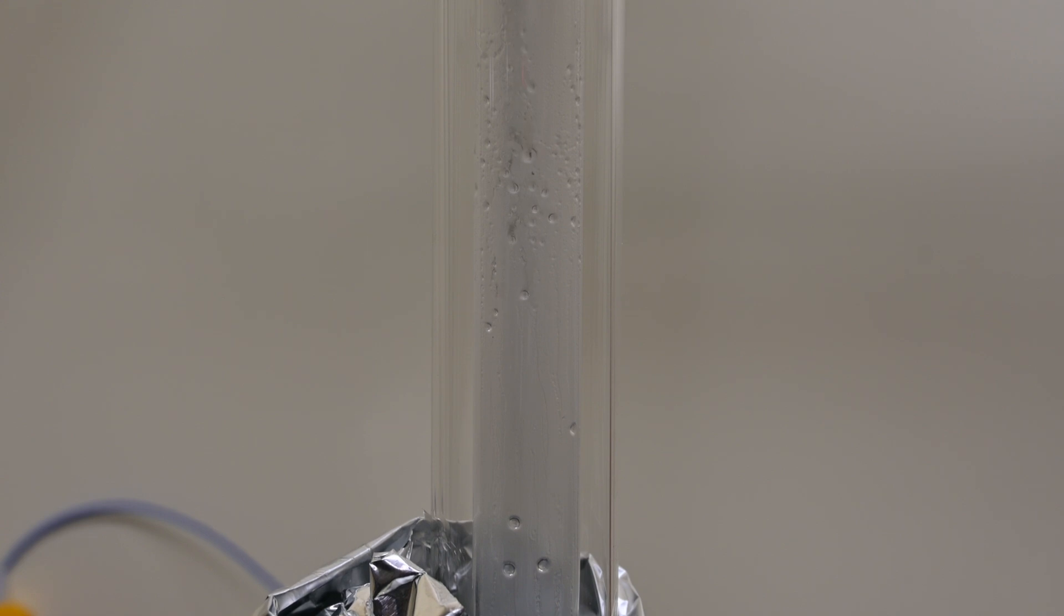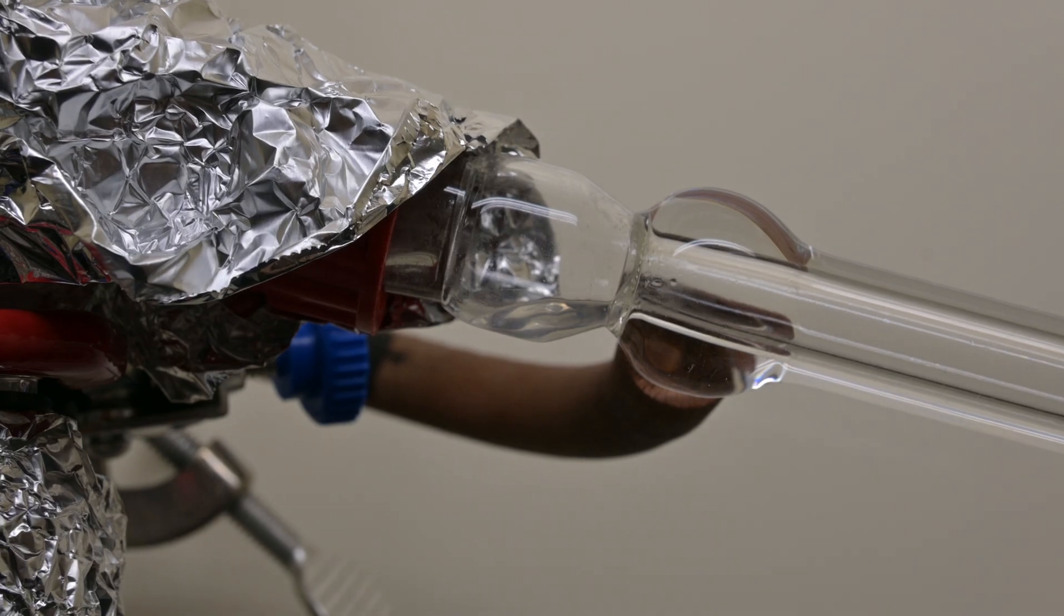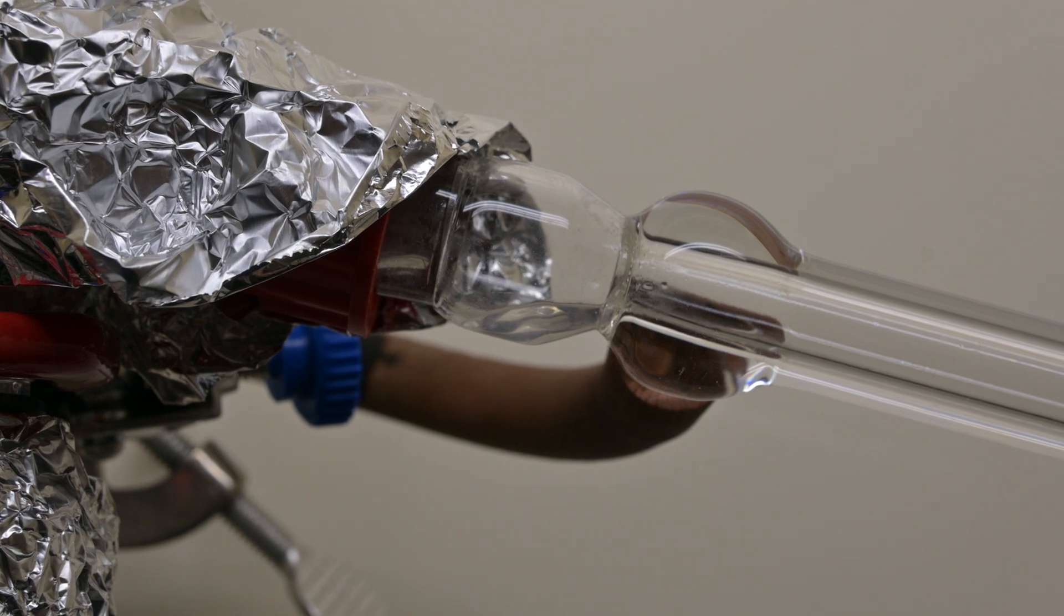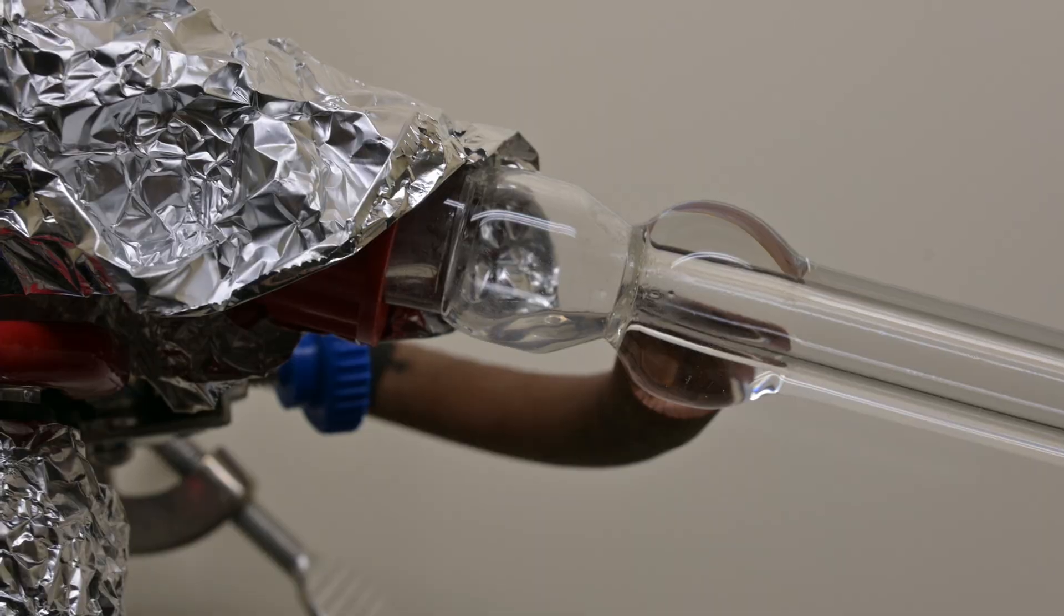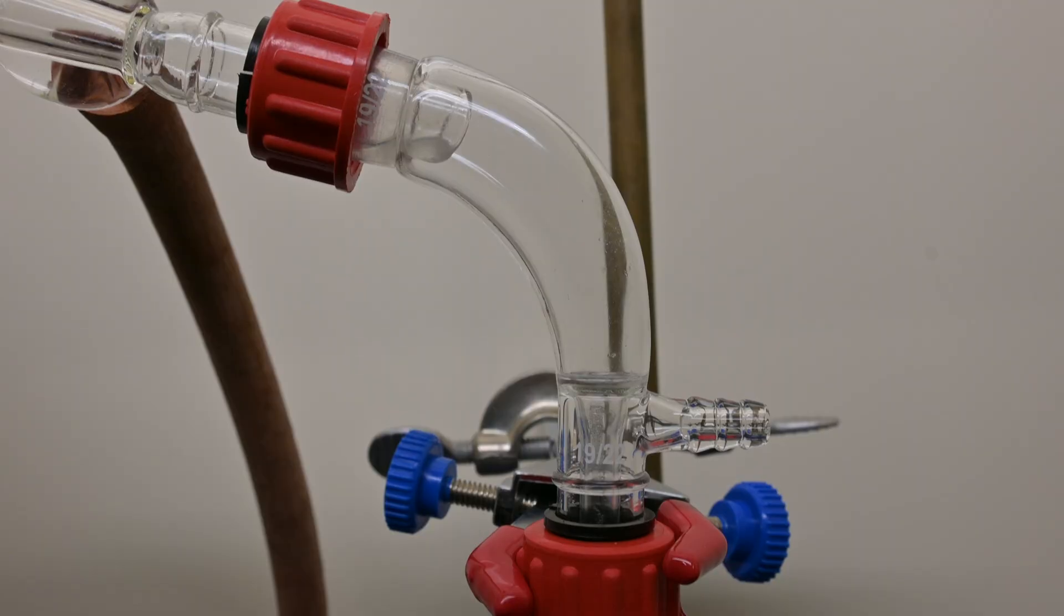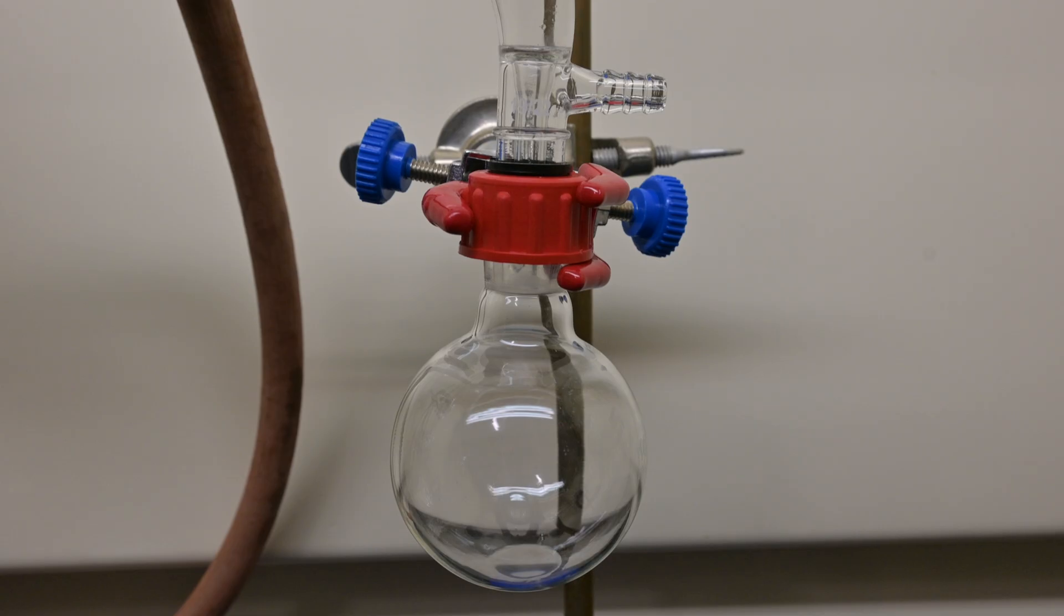We collect anything that comes over to the collection flask at around 145 degrees Celsius. Anything below this temperature will not be our styrene, and anything after this temperature range will also not be our styrene. You may have noticed I had to wrap the column with some aluminum foil. This was because it was condensing and was not making it over. The foil helps to keep in heat and allow the temperature of the column to increase till we get our boiling range that we want.